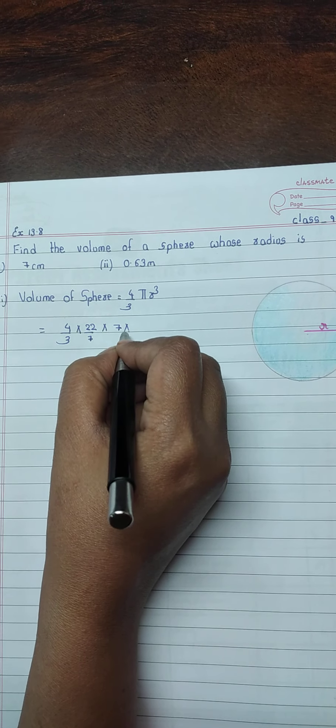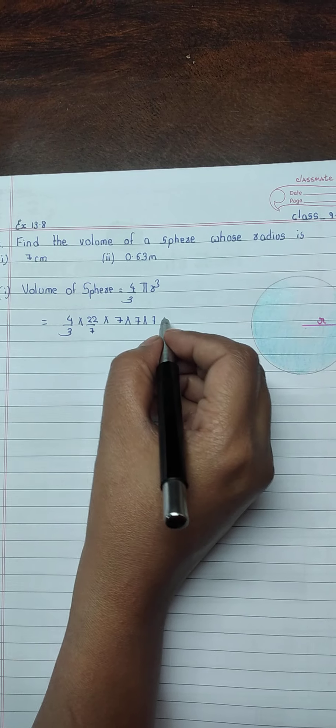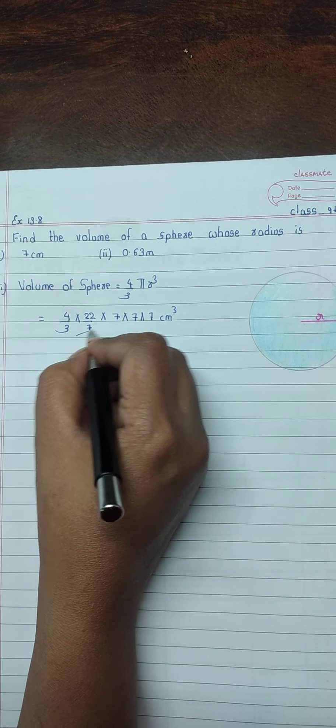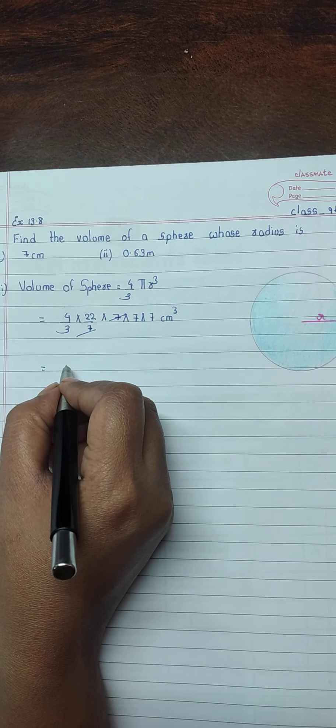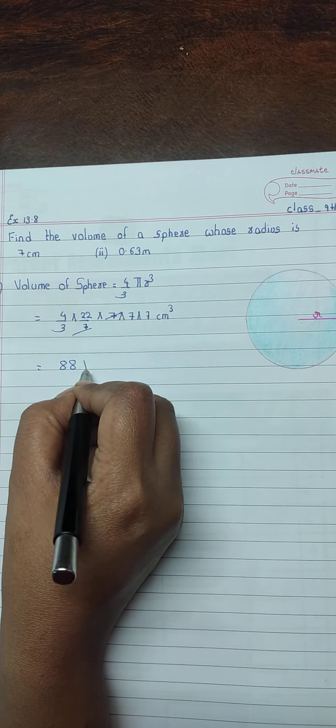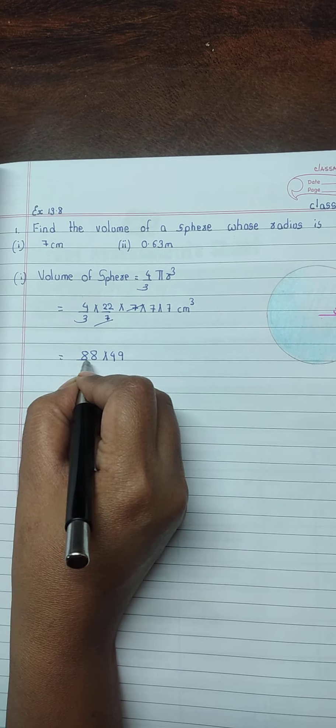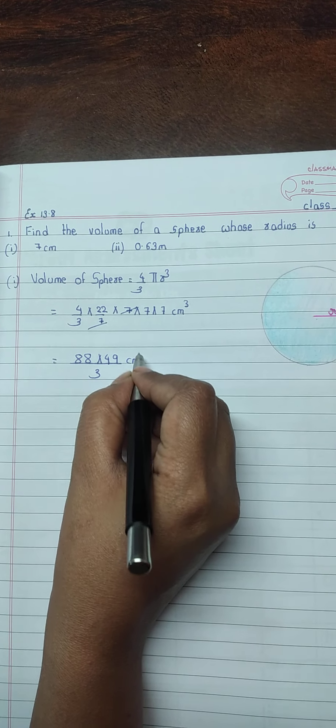7 into 7 into 7. Cube is there, therefore cm cube. 7 gets cancelled. 22 into 4 is 88 multiplied by 7 into 7 is 49, upon 3 cm cube.